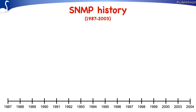In the second half of the 1980s, the Internet was growing fast, and the necessity to develop Management Standards became apparent. The first standard appeared in October 1987, and that standard was called HEMS-HEMP. HEMS stood for High-Level Entity Management System, and HEMP for High-Level Entity Management Protocol.